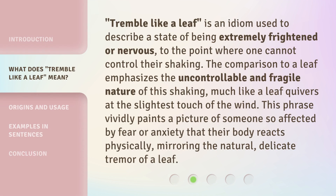'Tremble like a leaf' is an idiom used to describe a state of being extremely frightened or nervous to the point where one cannot control their shaking. The comparison to a leaf emphasizes the uncontrollable and fragile nature of this shaking — much like a leaf quivers at the slightest touch of the wind. This phrase vividly paints a picture of someone so affected by fear or anxiety that their body reacts physically, mirroring the natural, delicate tremor of a leaf.